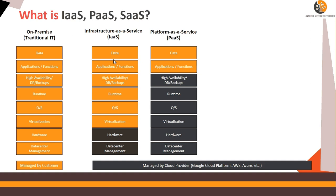When you talk about platform as a service, that means you are taking an Uber. With Uber, you just use the service to go from point A to point B — for example, from your home to the airport or from work to home. You're not paying for the rent, not paying for the gas, not paying for anything. All you're paying is for the travel. The car belongs to you for that period of time — that is platform as a service. In PaaS, all you have to own is your data and your applications and functions.